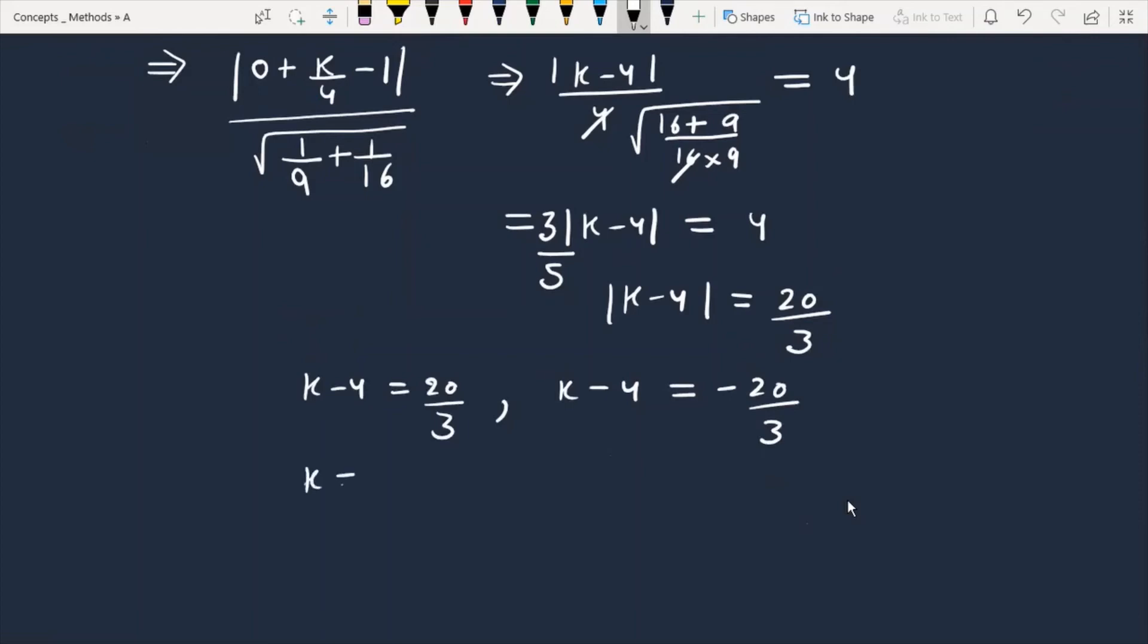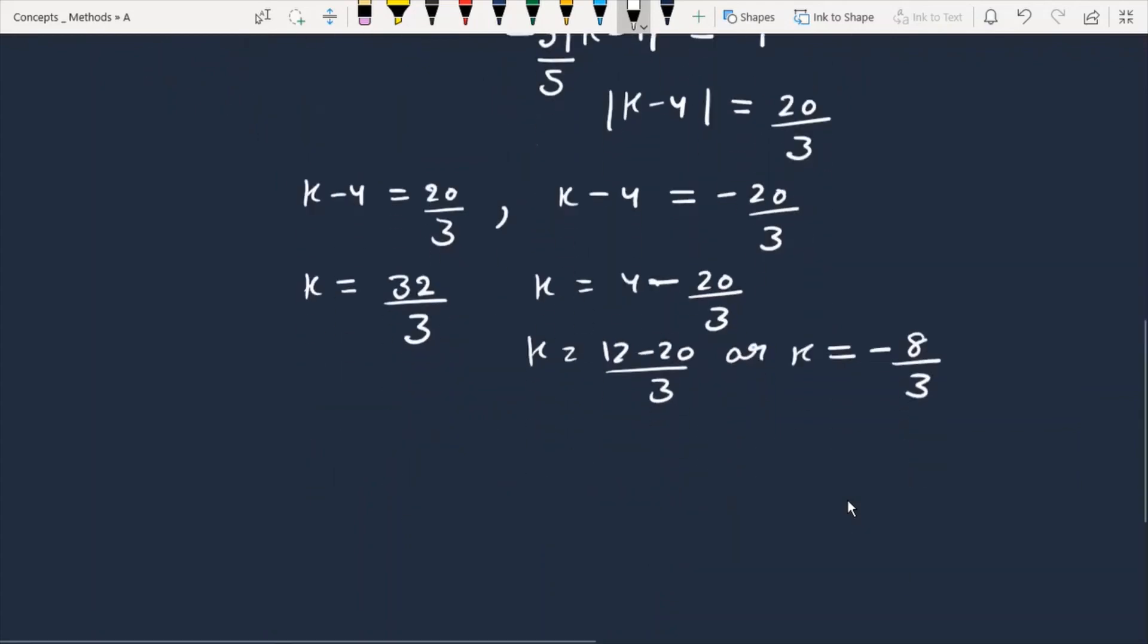So k is 12 plus 20, 32, that is 32/3. One k value. This is equal to 20/3, and we can say this is equal to -8/3. Finally two values we have got: one value k = -8/3 and one value 32/3.